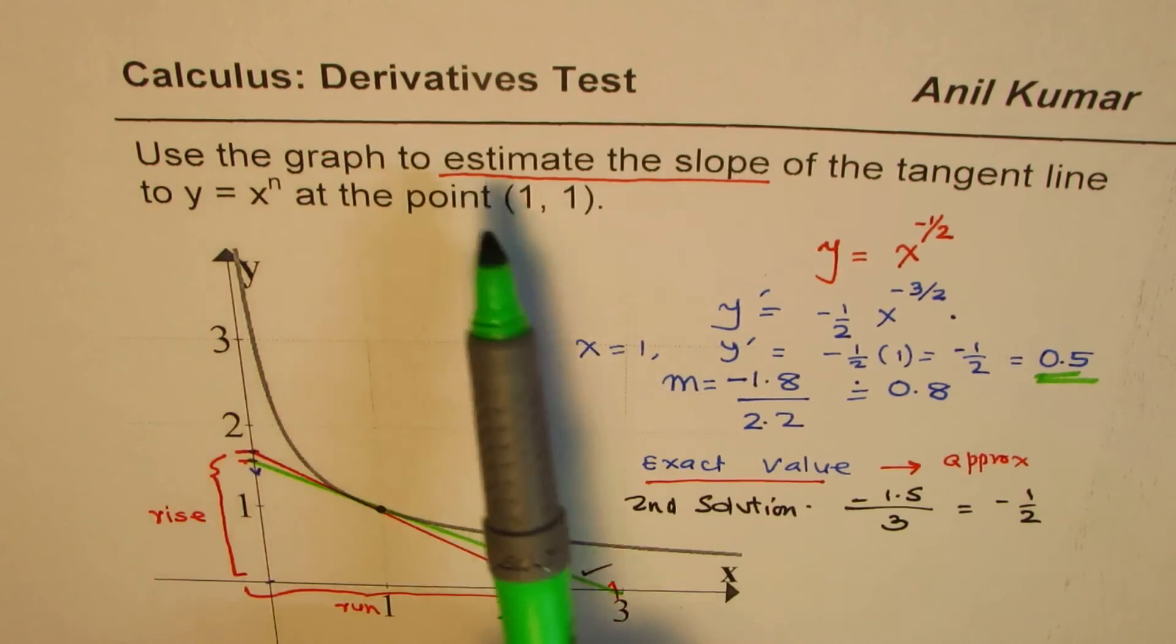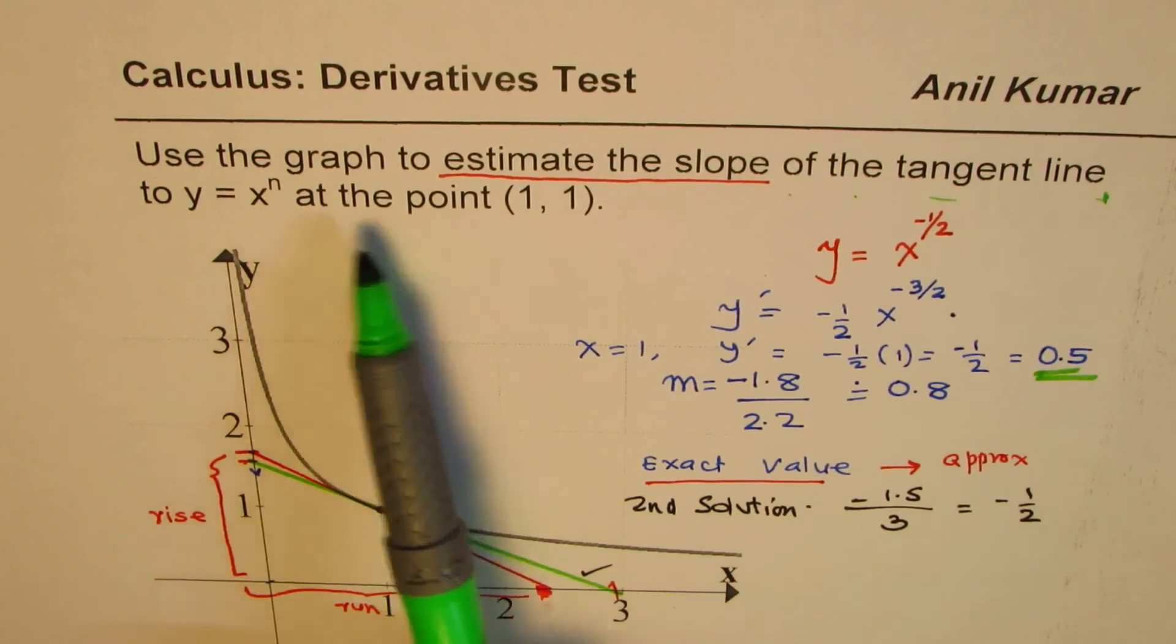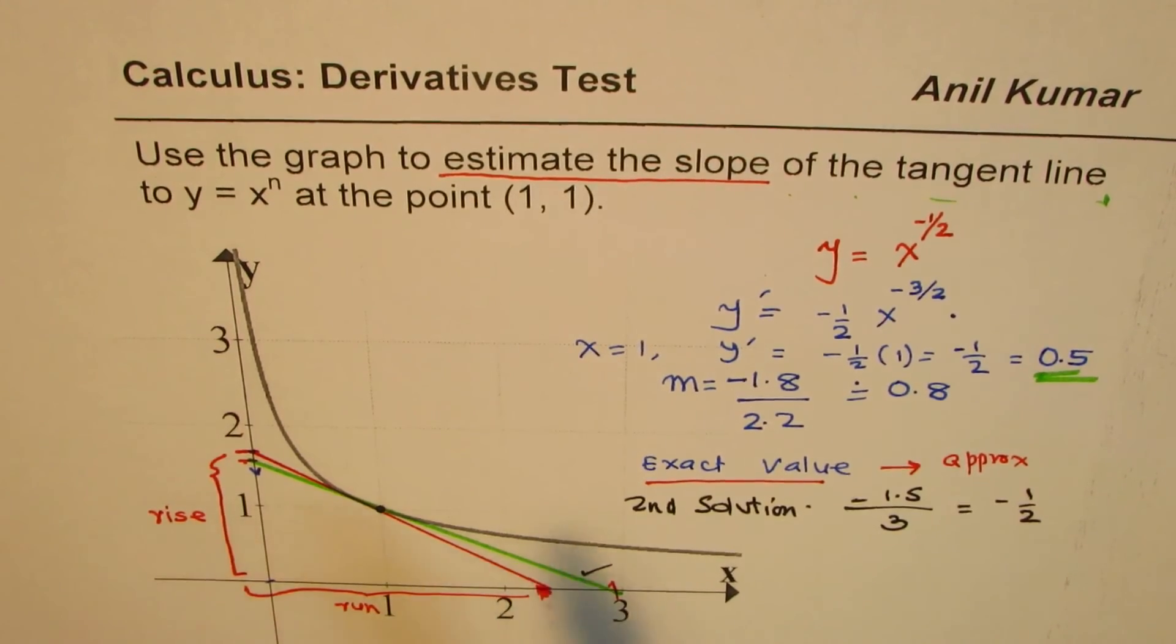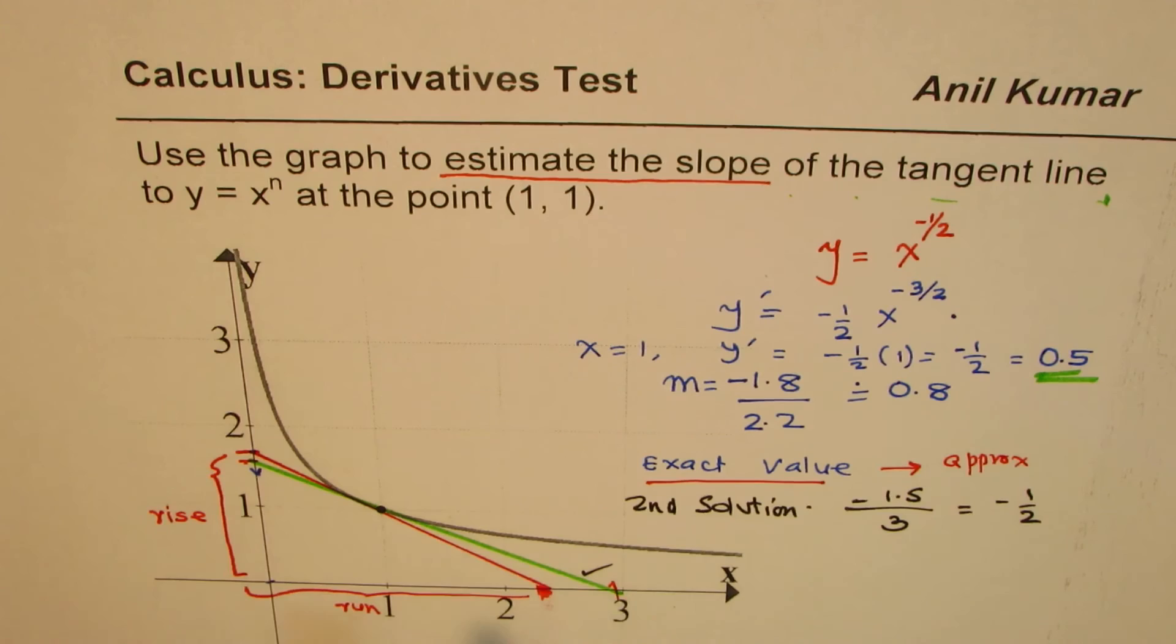When we say use the graph to estimate the slope of the tangent line to this equation at the point, it could be understood in both the ways. One, use the graph, that is just draw the tangent line and you're done.